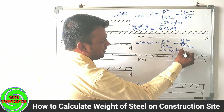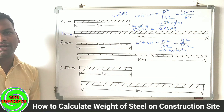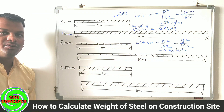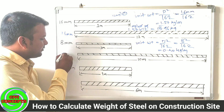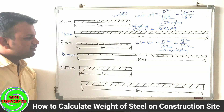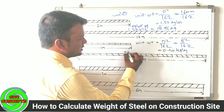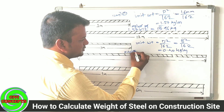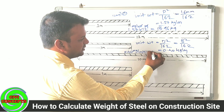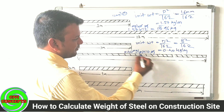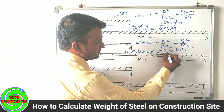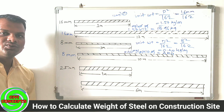For a 10mm bar: the unit weight is 0.617 kg per meter. The length is 10 meters. Unit weight multiplied by 10 meters — meters cancel — and your answer is approximately 6.17 kg. This is the total weight.